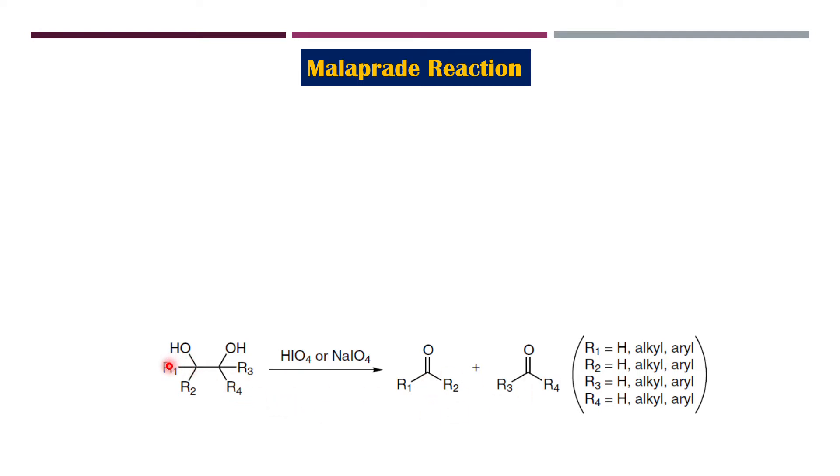If you have both alkyl and alkyl and H, your product over here is going to be your ketone and aldehyde. If you have alkyl, alkyl, alkyl, alkyl, then your products over here is going to be obviously all ketones.